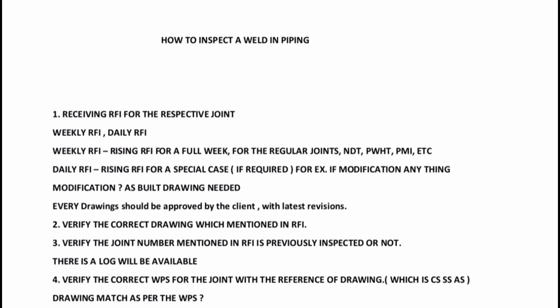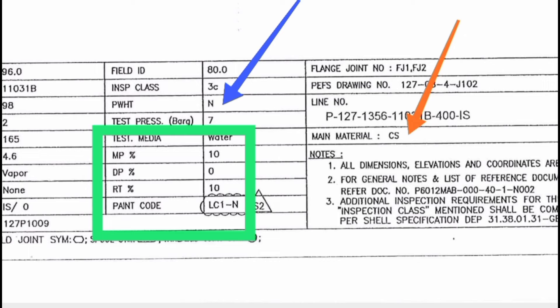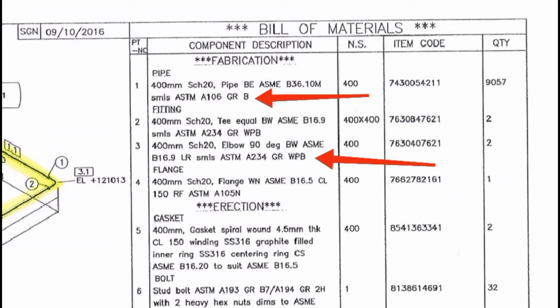Let's try to verify the correct WPS for the joint with reference to the drawing. I will show you the drawing. If you have the material, let's try the WPS. This is the material — this is carbon steel. The pipe is ASTM A106 and the fittings are ASTM A234.